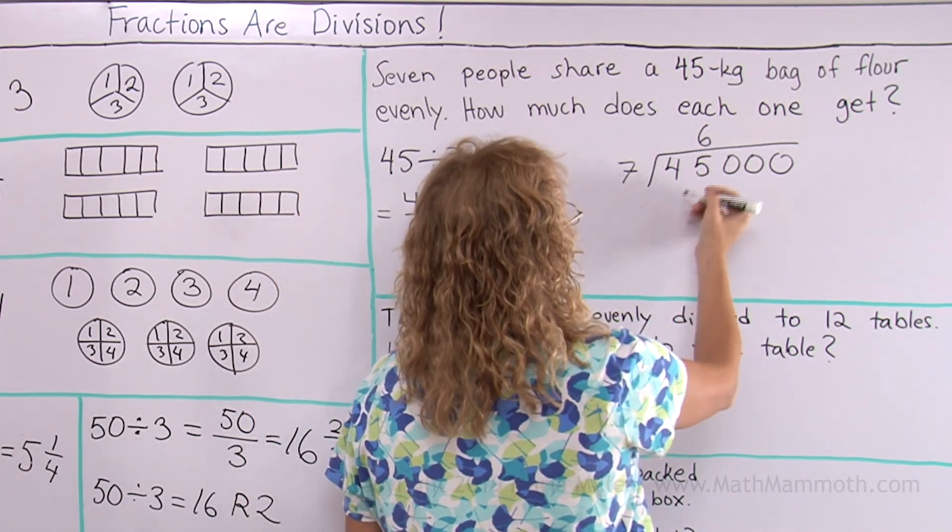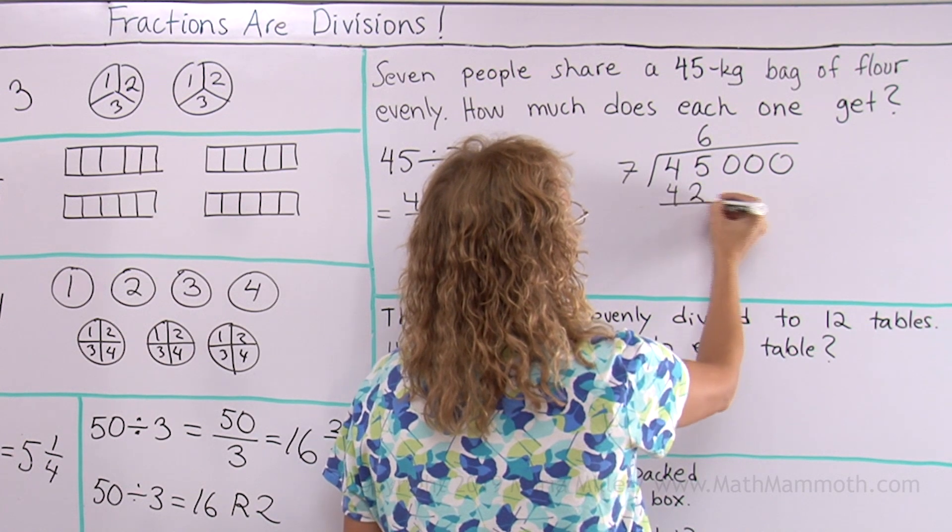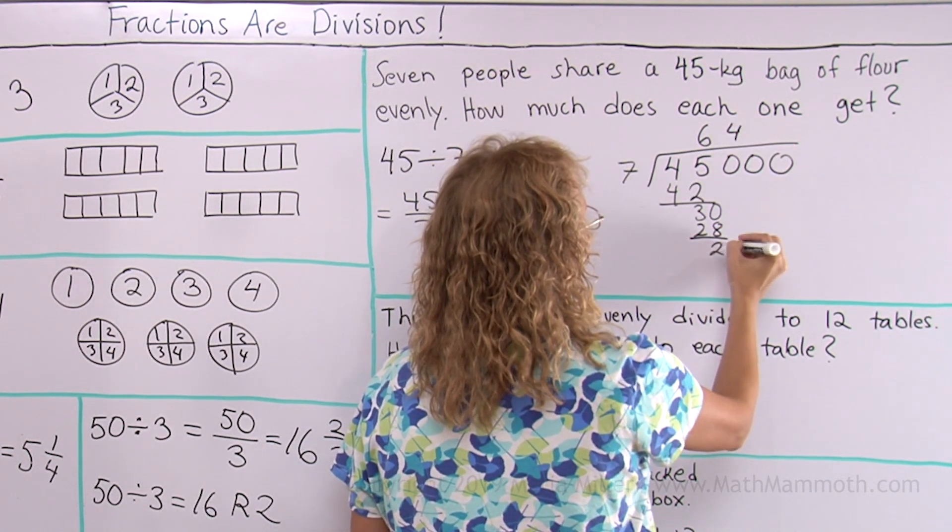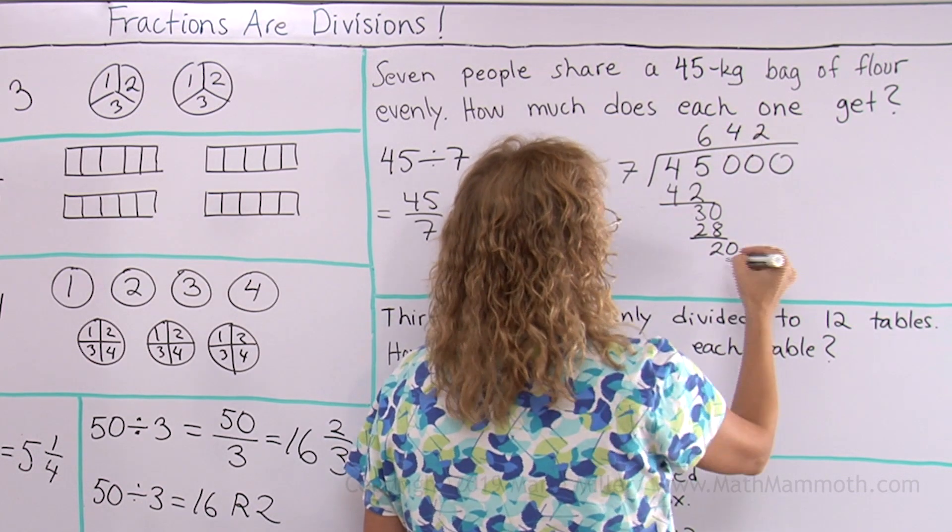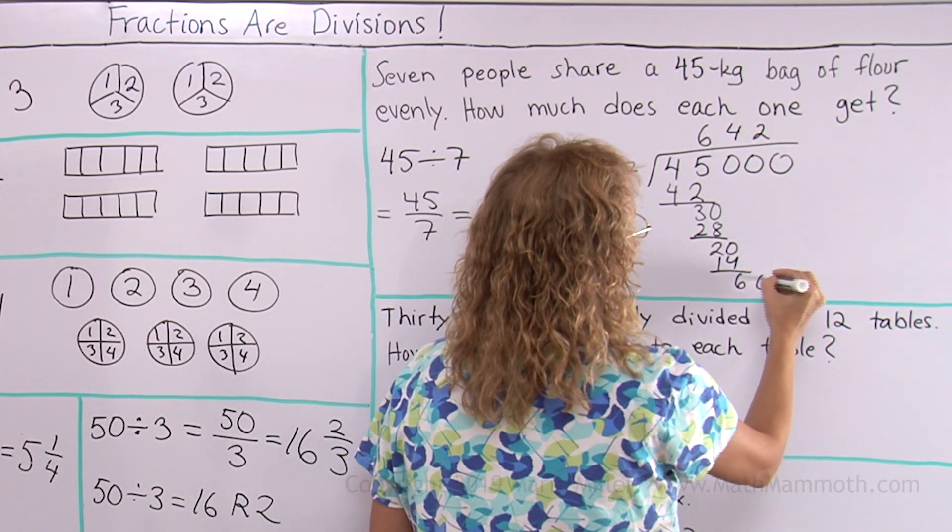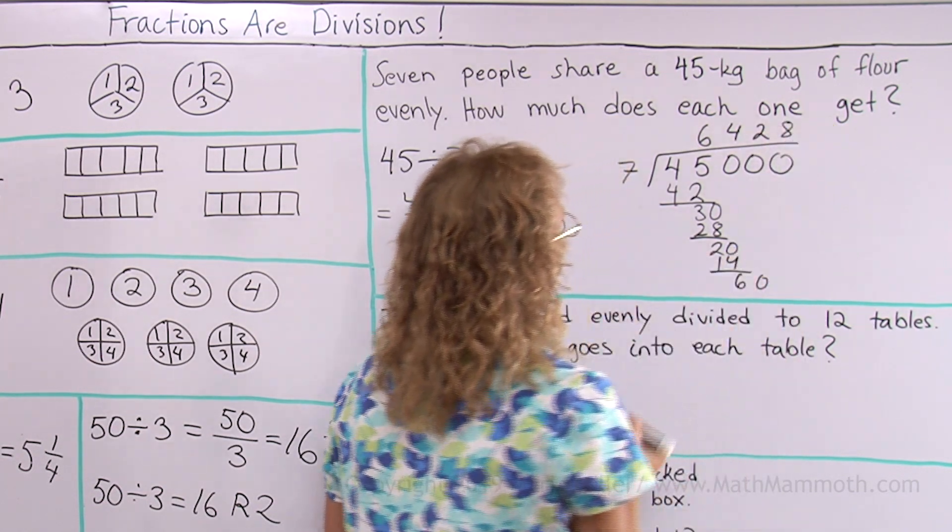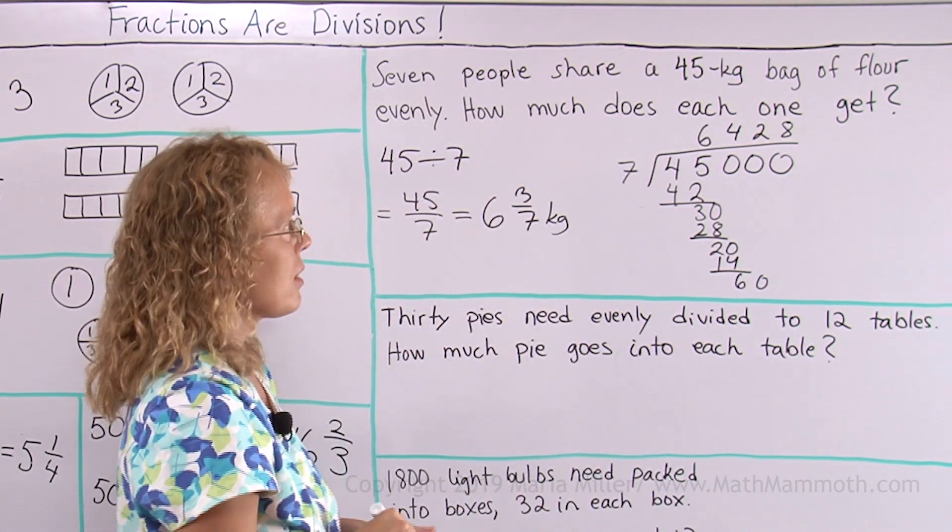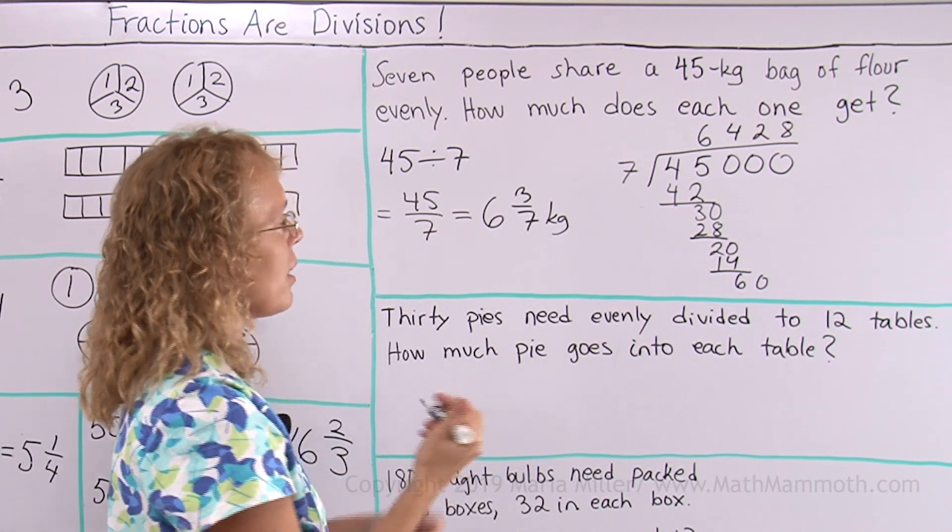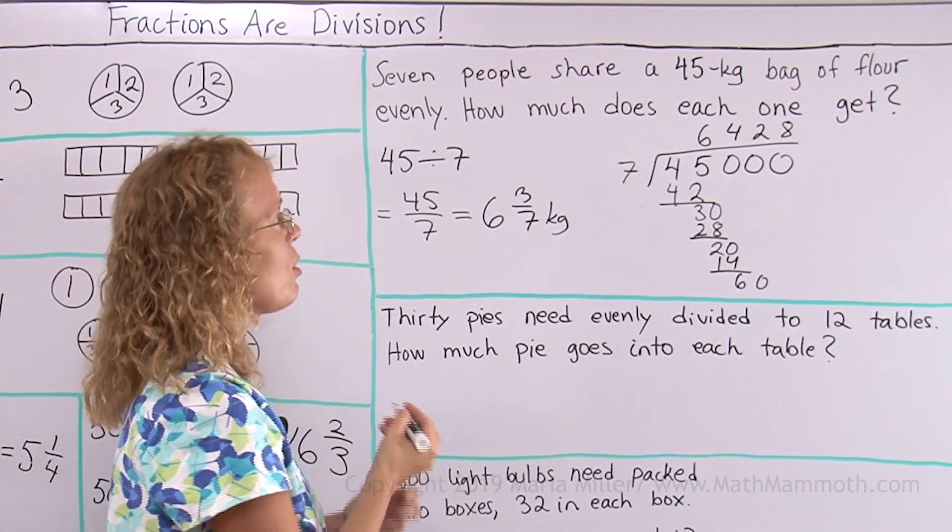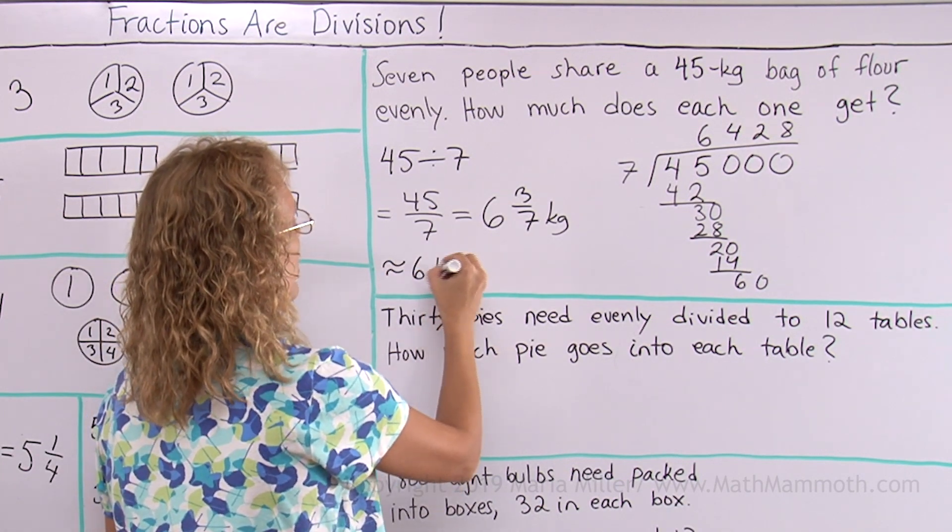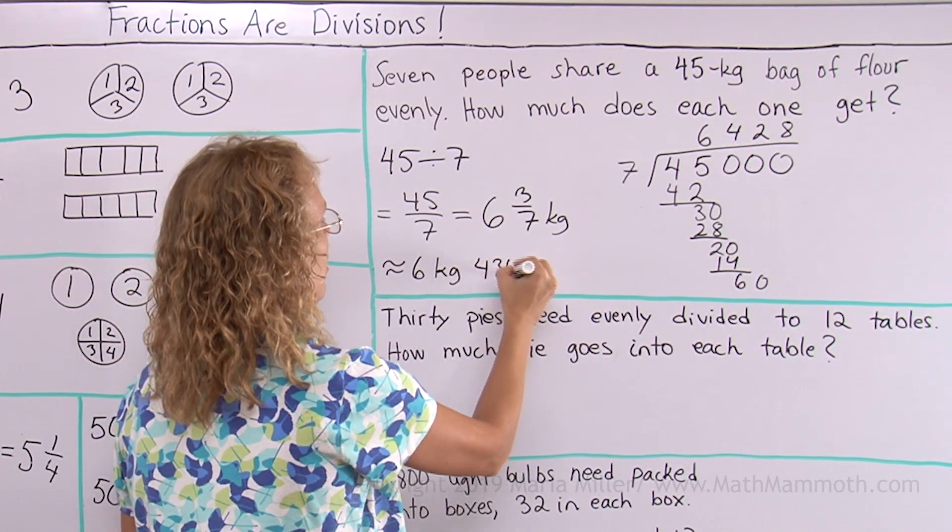Seven goes to 45 six times, of course. Here we get 42 and then 30 four times, then 20 two times and then 60 eight times. It would continue, but I can stop here. I get my amount in grams, 6428 grams, which is about 6 kilograms and 430 grams.